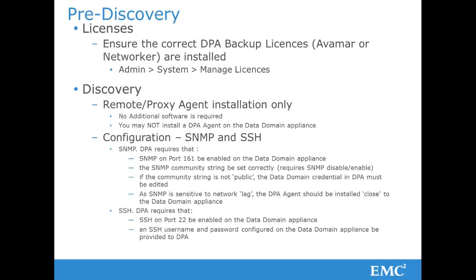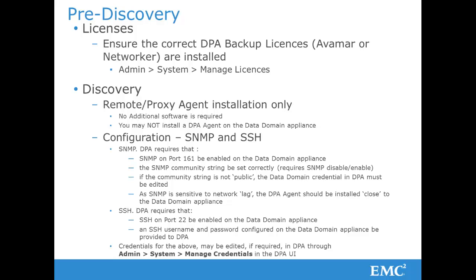For SSH, DPA requires that port 22 be enabled on the Data Domain Appliance, and that the SSH username and password configured on the DD appliance be provided to DPA. Editing of those credentials, if required, may be effected through the Admin, System, Manage Credentials tab in the DPA UI.